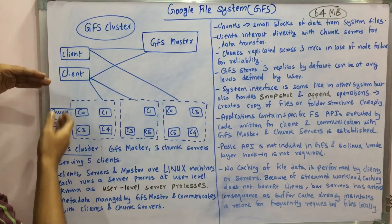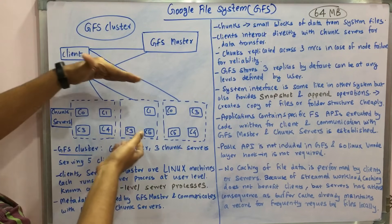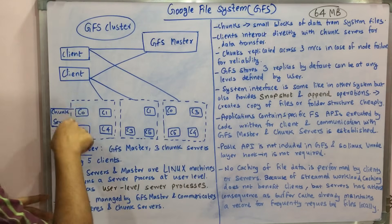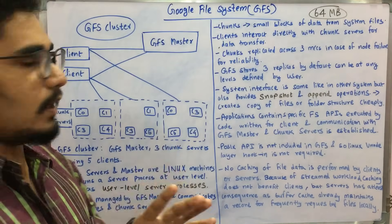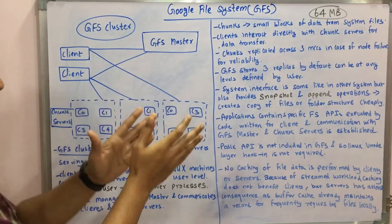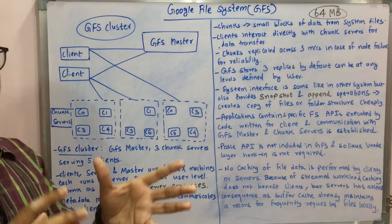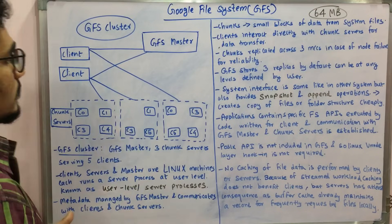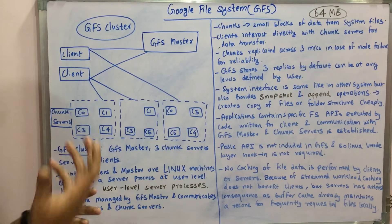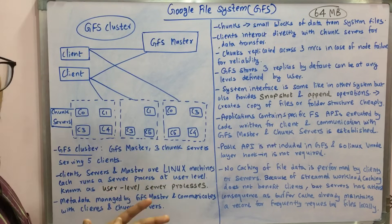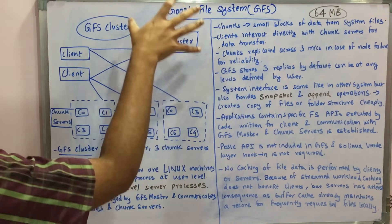There are two clients, segregated into three different bifurcations, and a number of chunk servers. The dotted boxes are chunk servers, and inside them you can see C0, C1, C3, C4, and C5 — five different chunks. Each chunk is replicated across three different chunk servers. In case of any node failure, if C0 is inaccessible, you can obtain it from a third replica.